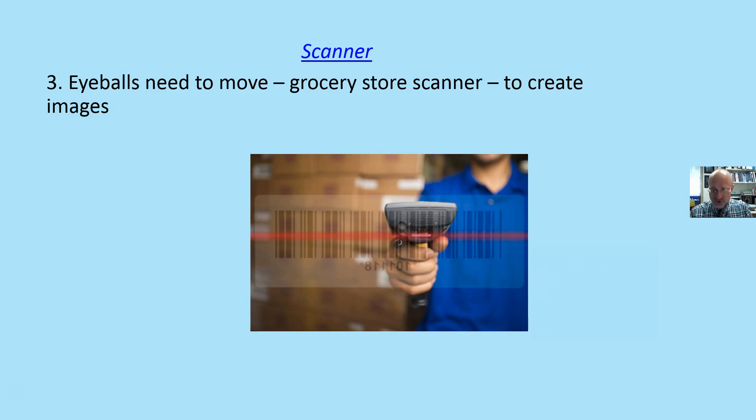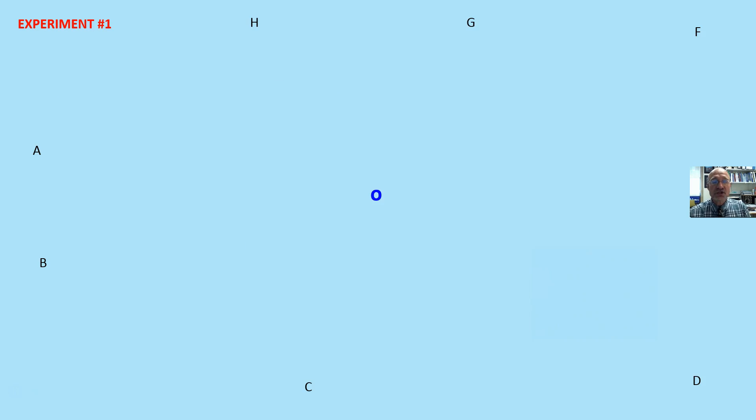Our eyeballs really need to move in order to see and create a picture of reality. As an experiment, you can stop the video right here, and if you stare at the blue O in the middle, you will see that the data on the outside begins to fade away. That's because our eyeball needs to move in order for us to create a picture of reality on our brains.